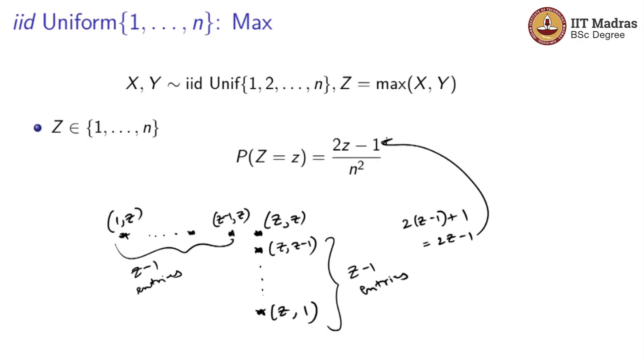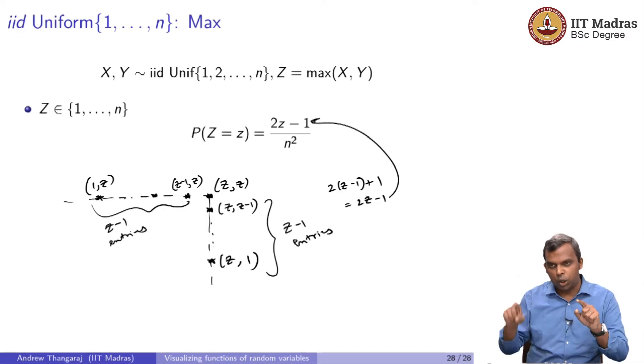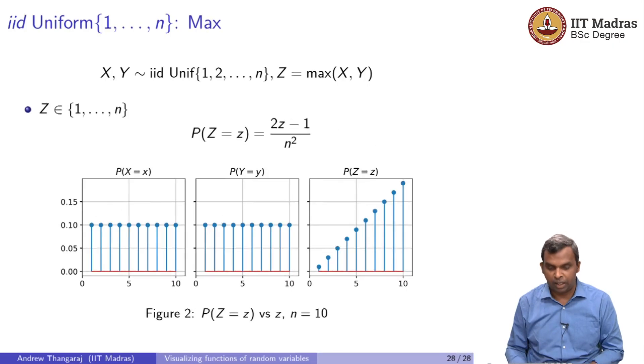For the max, you have this contour which is like in this shape. You go through and count it up, you will get 2z minus 1 plus 1, and that is 2z minus 1. So we see how the 2z minus 1 comes for the max. You can either visualize it with the contour that I showed before or you can just analytically look at the max of X, Y and simply count the number of X comma Y that gives you a max equal to z and you will get it.